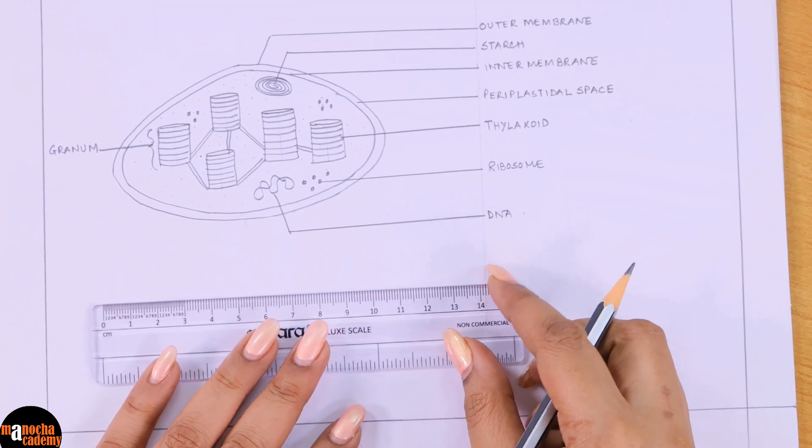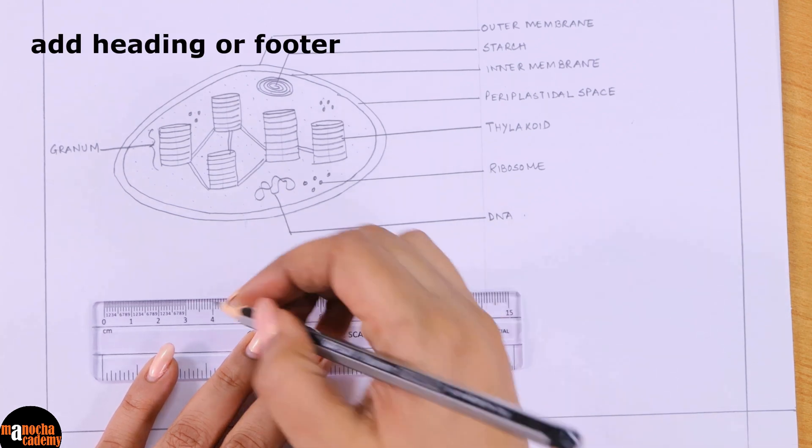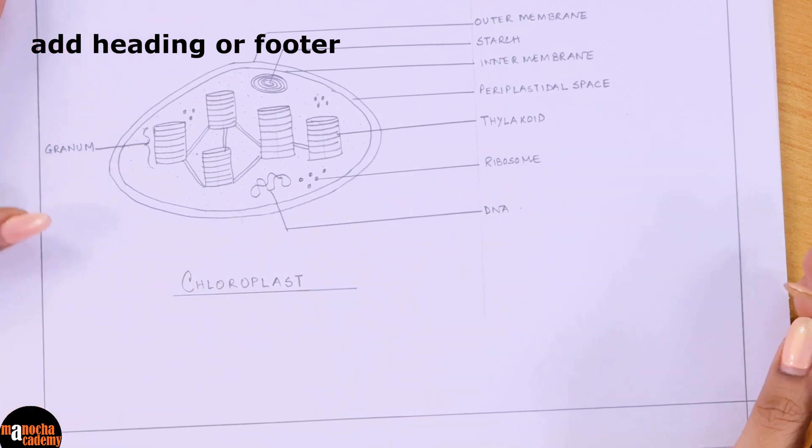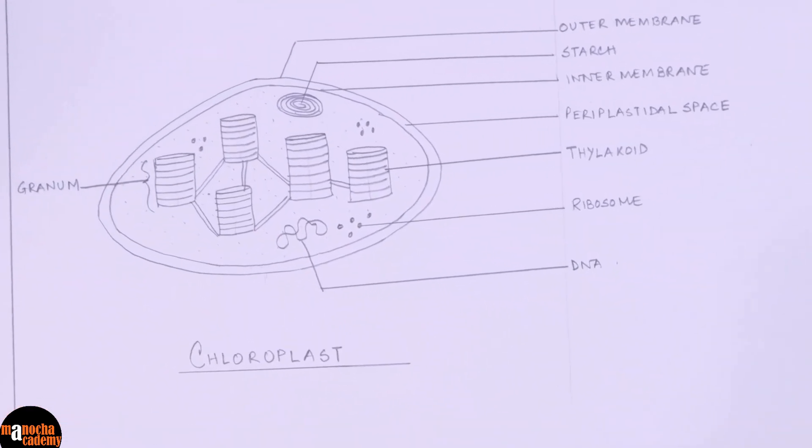So finally I will be giving a heading or a footer to this diagram denoting what I have drawn. So this is the diagram of the chloroplast and that is how it should look like.